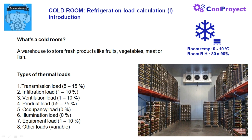Some products like garlic or onions produce a large amount of sulfur vapors that we need to remove from the room. For most fresh products, the air changes due to infiltration are enough to ventilate the chamber.